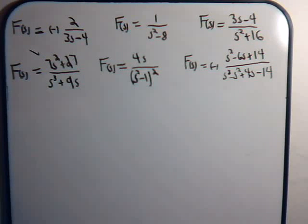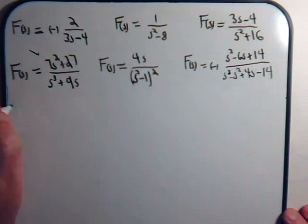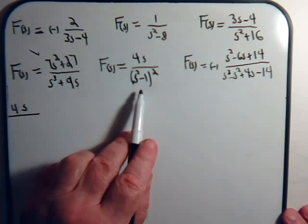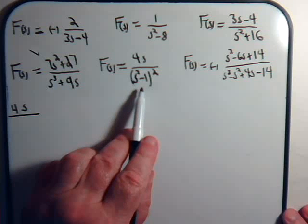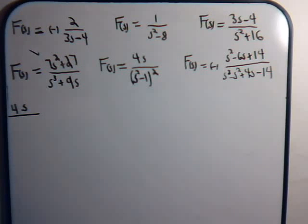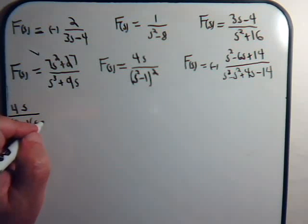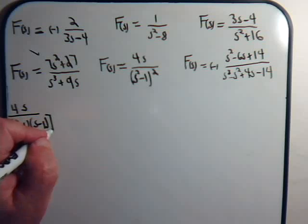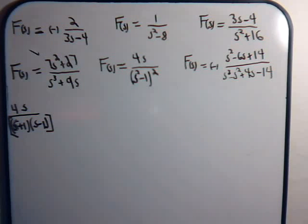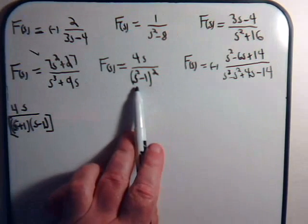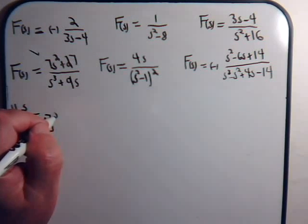Now I want to tackle this one. We have 4s divided by s squared minus one, and we can factor this out because s squared minus one is the difference of two terms. So we have s plus one times s minus one, and this is squared.